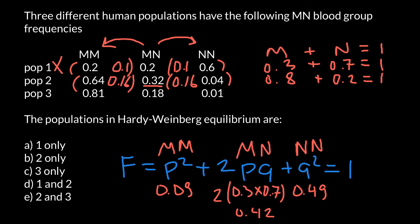For the heterozygous genotype, 2pq = 2 × 0.8 × 0.2 = 0.32. All three numbers match as predicted by Hardy-Weinberg equilibrium. So population 2 is in Hardy-Weinberg equilibrium, meaning that if this population randomly mates, all these numbers would stay the same in the next generation.